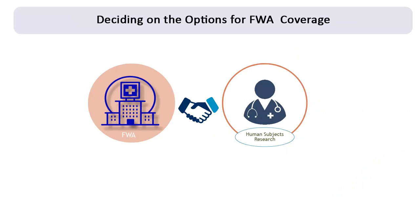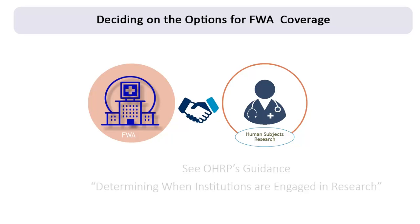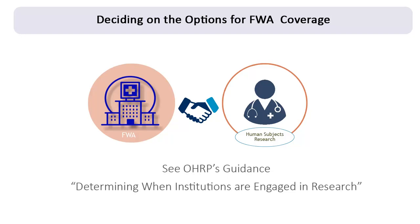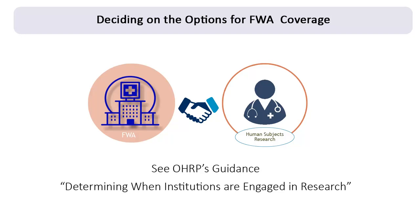Which option is best? In general, it would be for the FWA-holding institution and the institution that employs the investigators but doesn't hold an FWA to determine which option would work better for them. For more information about these options, see OHRP's guidance determining when institutions are engaged in research.